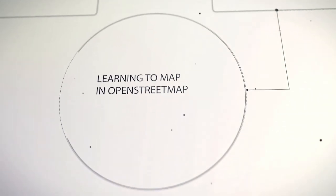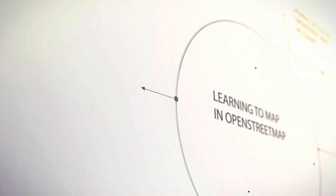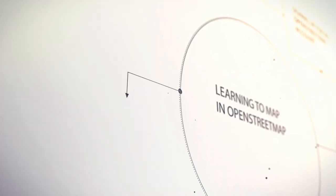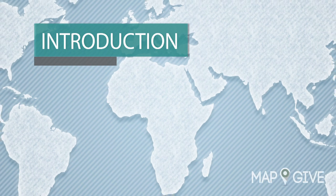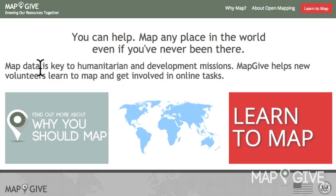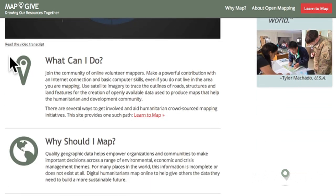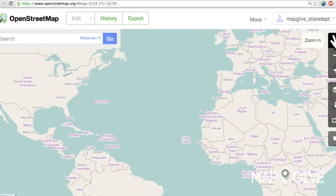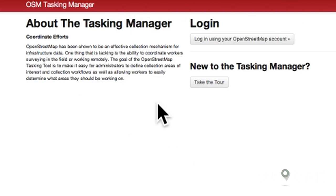Learning to Map in OpenStreetMap. The MapGive campaign gives you an understanding of why open map data is important to people all over the world, and why you should invest your time to help create map data online through OpenStreetMap.org and the OpenStreetMap Tasking Manager.